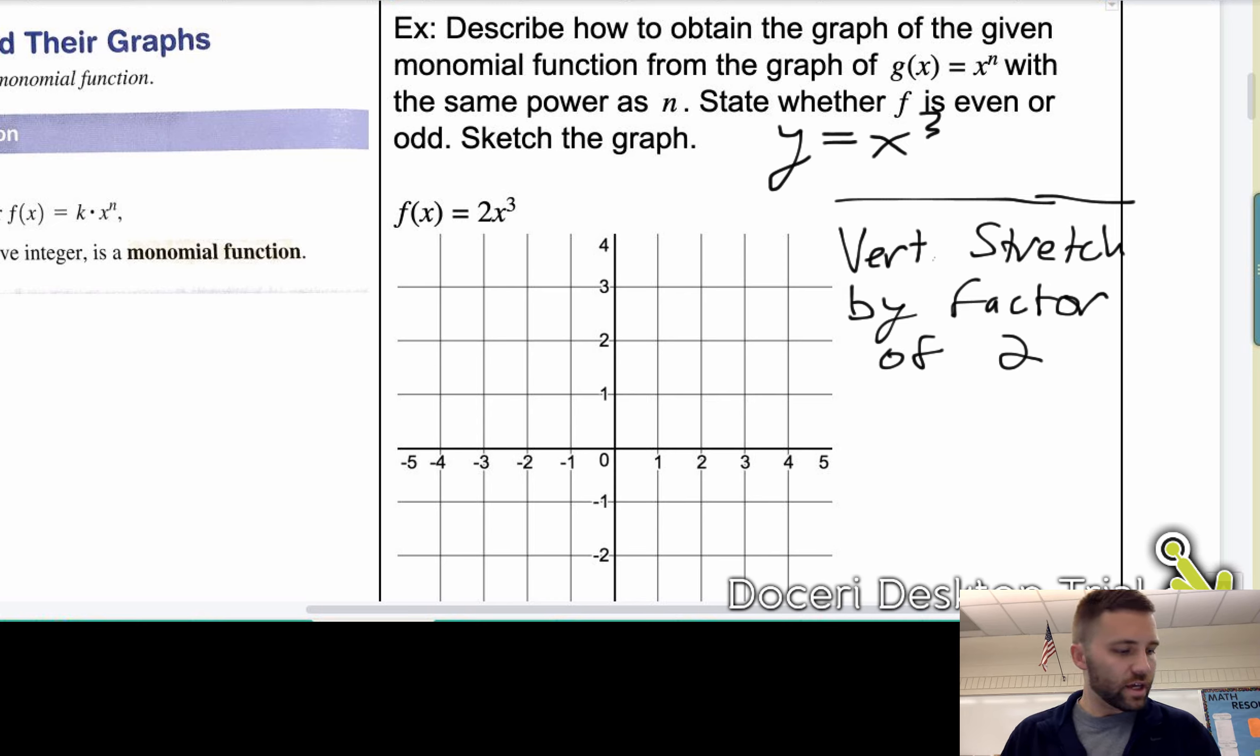If we take a look at the graph of this, it goes through the point negative 1, 2, 0, 0, and 1, 2. And it's a cubic function. So it looks sort of like this. Okay. So there, we can analyze it graphically to determine if it's even, odd, or neither. Even would have y-axis symmetry. And odd would have origin symmetry. This has origin symmetry.